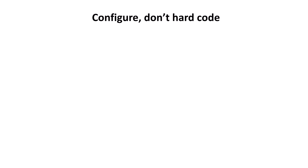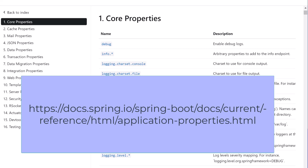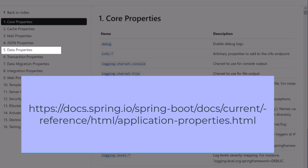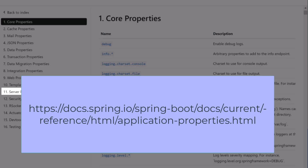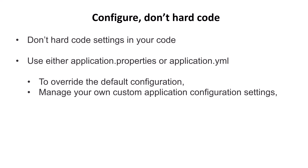Next up, number six: configure, don't hard-code. Use the application.properties or application.yaml file to configure your application. Spring Boot uses these files to configure various aspects of the application, such as the database connection details, server port, and so on. Use the settings in these files to override the default configuration and change the behavior to meet the needs of your application or comply with the policies of your organization. Manage any custom application configuration settings in these files too.